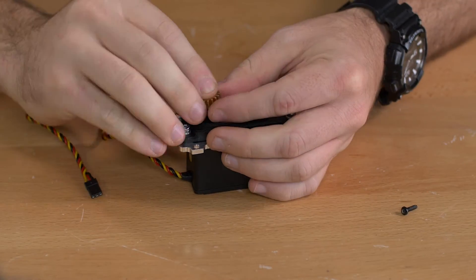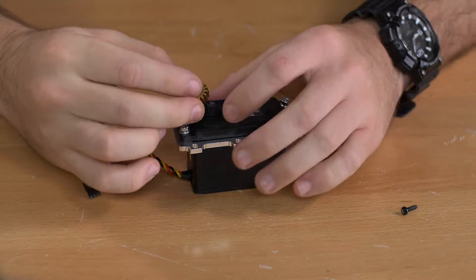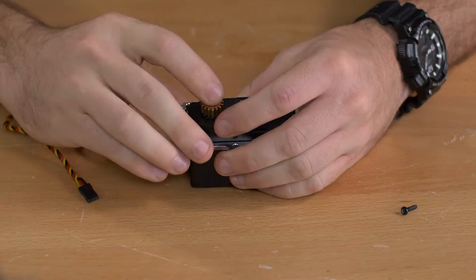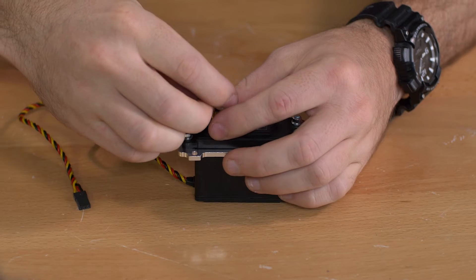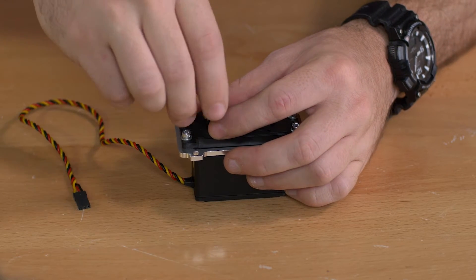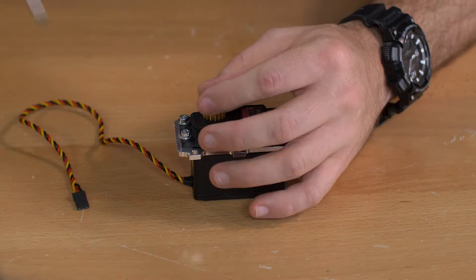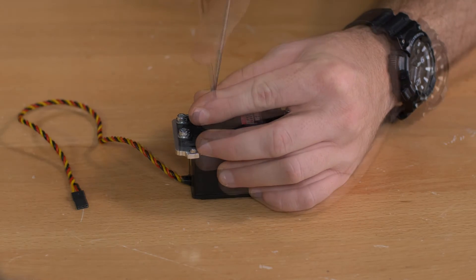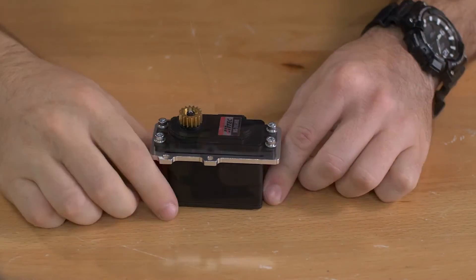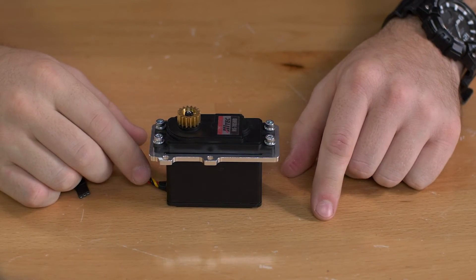Once we finish that we need to add the gear to the top of the servo. We'll just use a Phillips head screwdriver to finish that off. Alright, once that's done we're going to put that off to the side and move on to the next step.